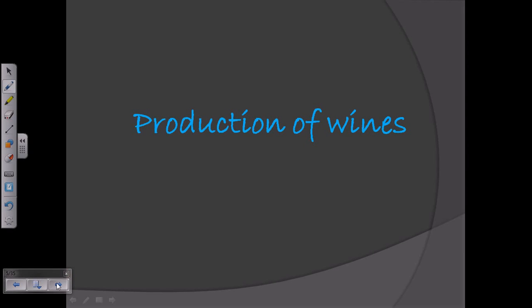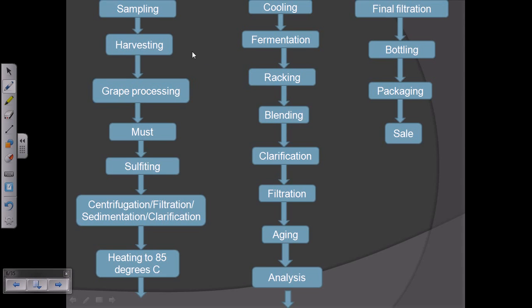Now let's talk about the production of wines. This is the flowchart, so I am just going to read this flowchart for you. First sampling of grapes, then the harvesting of this grape, and then the grape is processed, that means simply crushing the grape to produce what is called must.